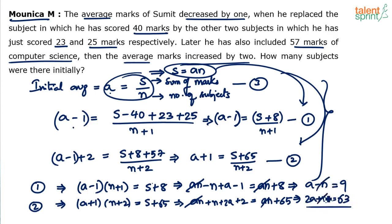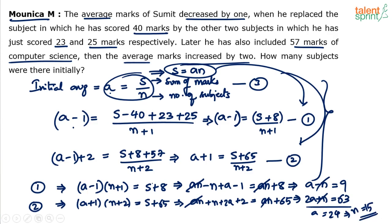3A equals 72, so A equals 24. If A is 24, then from A minus N equals 9: 24 minus N equals 9, so N equals 15. Therefore, there were initially 15 subjects, and the initial average was 24.